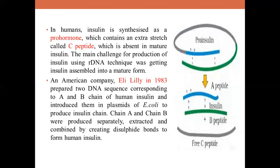In 1983, the American company Eli Lilly prepared two DNA sequences corresponding to the A and B chains respectively, introduced them into E. coli plasmids to produce the chains separately, then extracted, purified, and combined them by creating disulfide bonds to form mature human insulin, also called Humulin. Today many companies synthesize insulin using E. coli as a host system with suitable plasmids like pBR or UC series plasmids, enabling large-scale production.